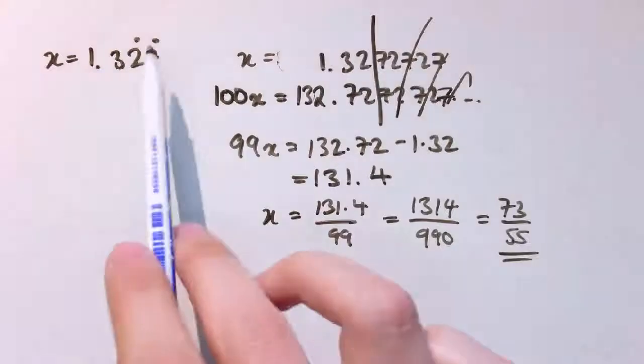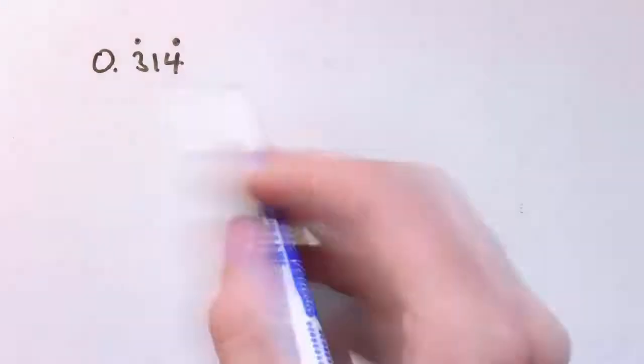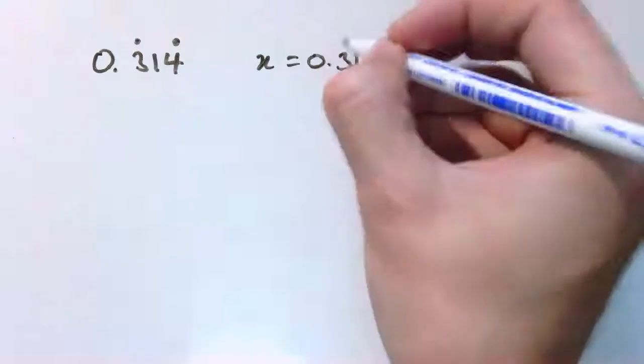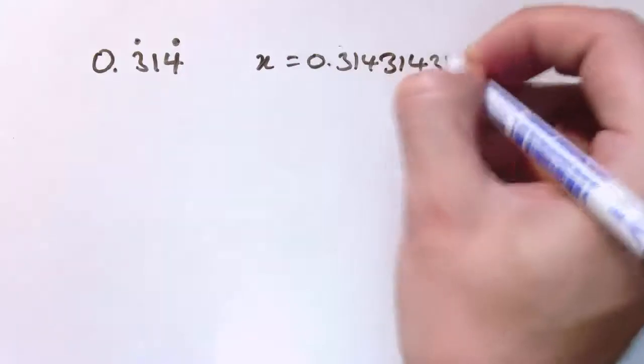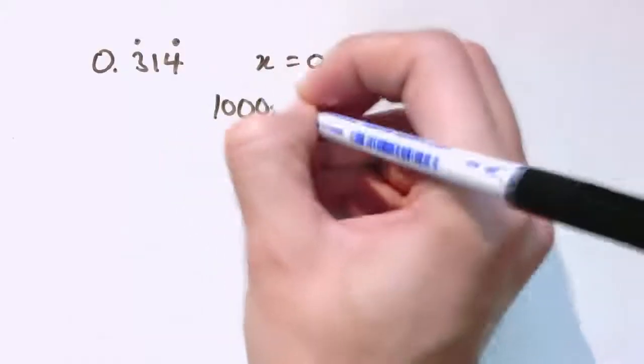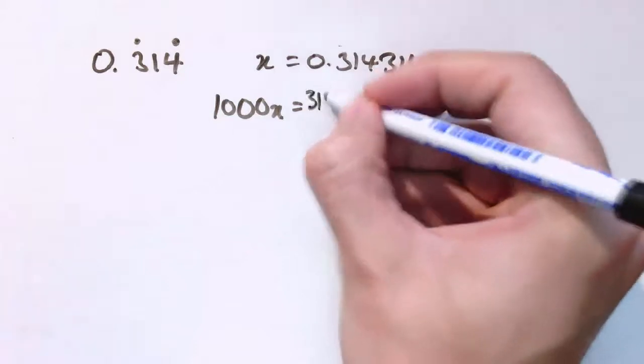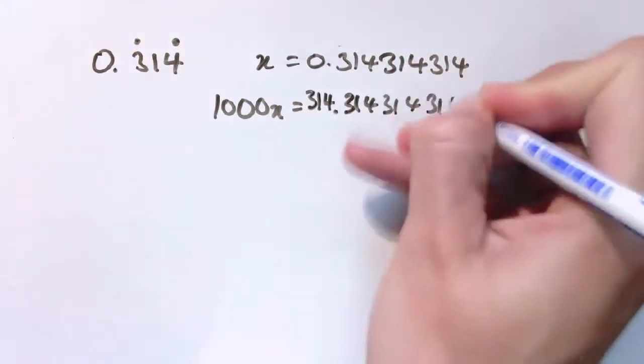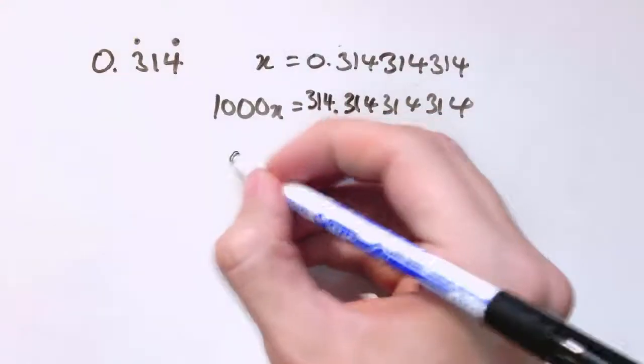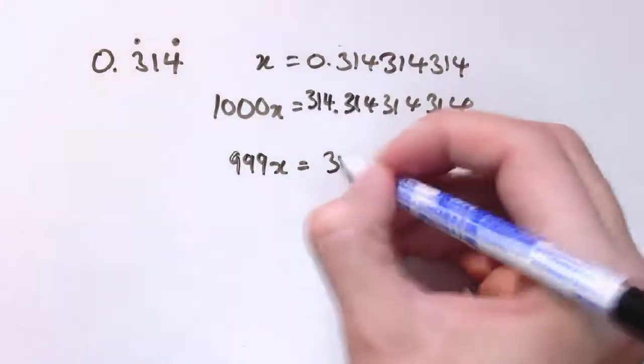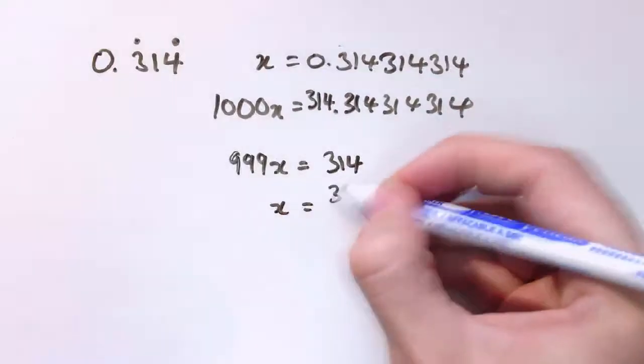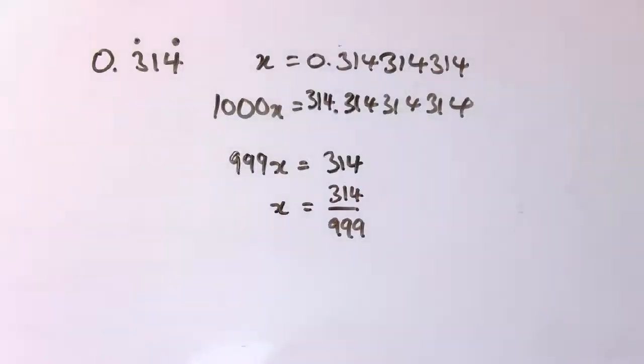That same technique applies. If it's one dot we times it by 10, two dots times it by 100. You can perhaps guess what's coming: if I've got three dots, I am going to take this and times it by 1000. So 0.314 recurring would be 314 314 314.